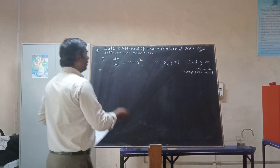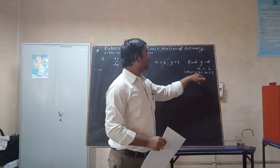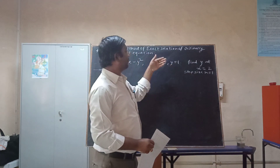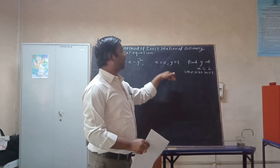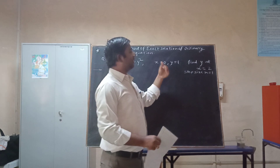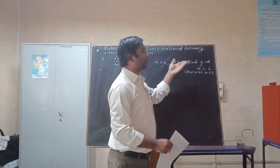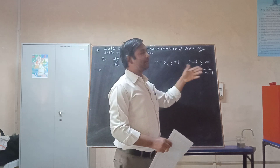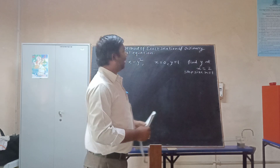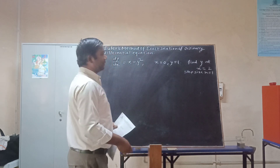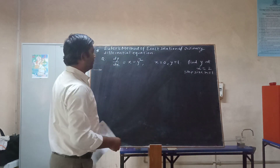What h=1 means is that first we will calculate y for x=1, then we will calculate y for x=2. In this way it will be a two-step Euler's method, or two iterations.